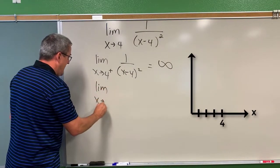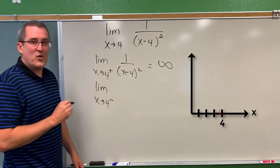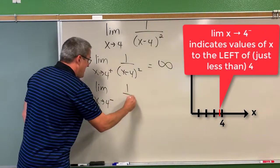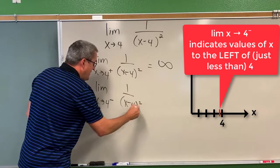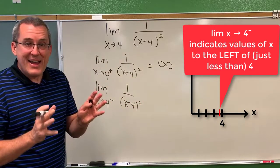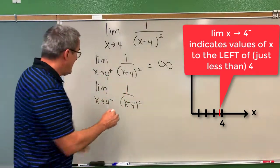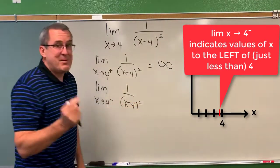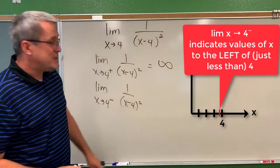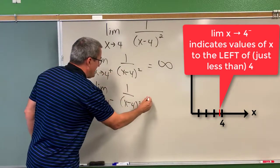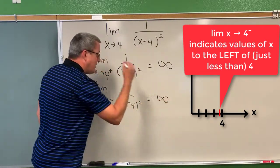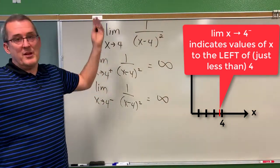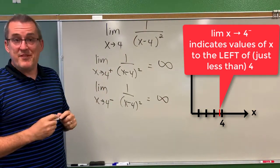What about when x is slightly to the left of 4, like 3.99999? When we input values for x nearby 4 from the left, we get a negative result, square it, and we get a positive result — but that positive value is really, really small. And 1 over that really small quantity is again a very large quantity. So the output values just explode, and we say they blow up to infinity.